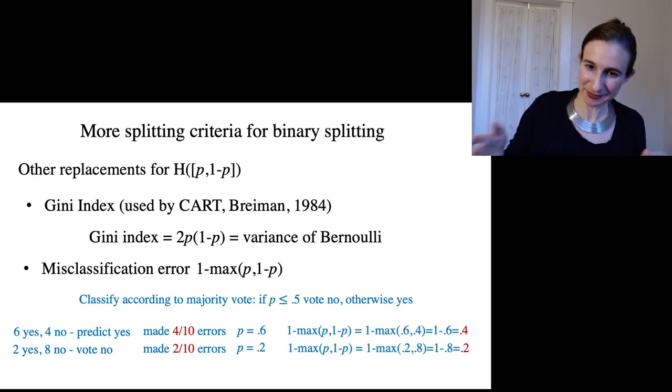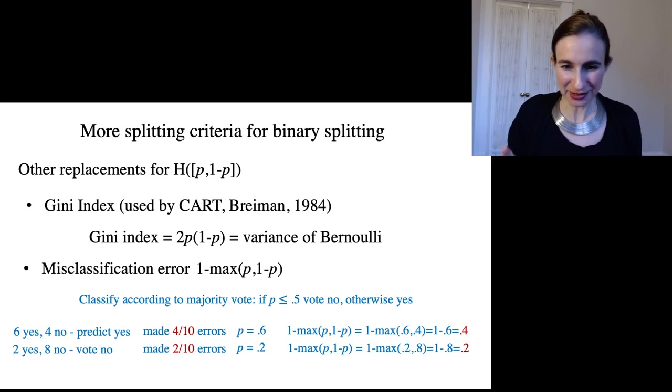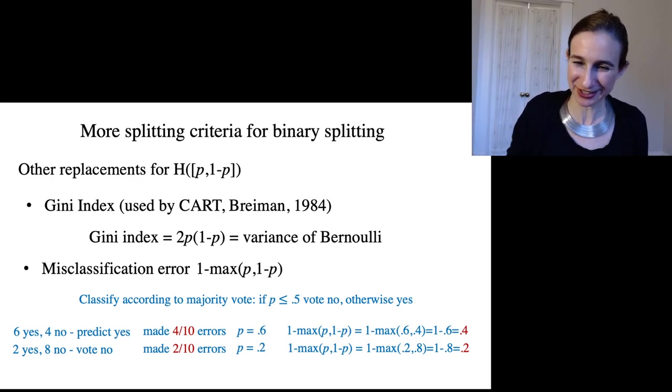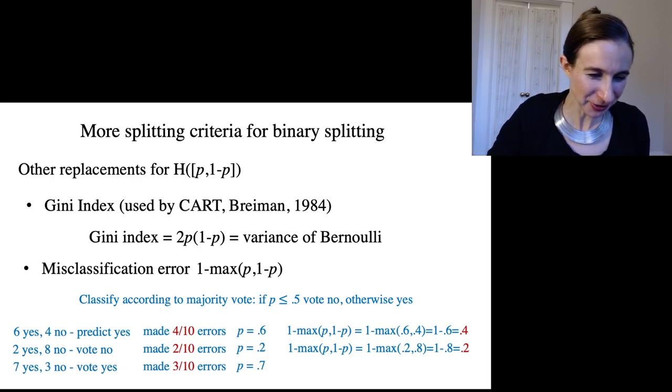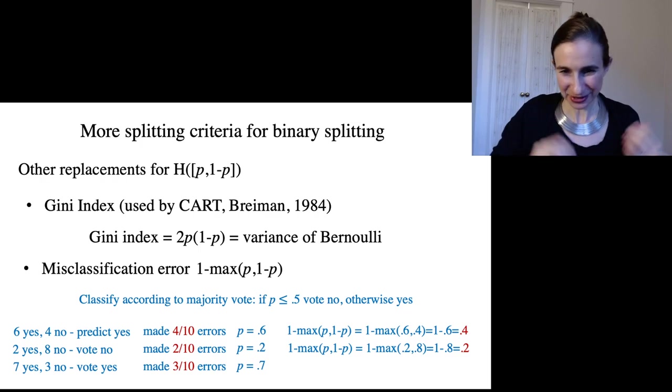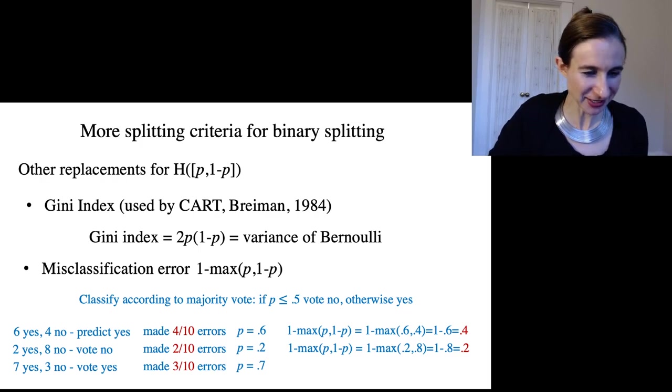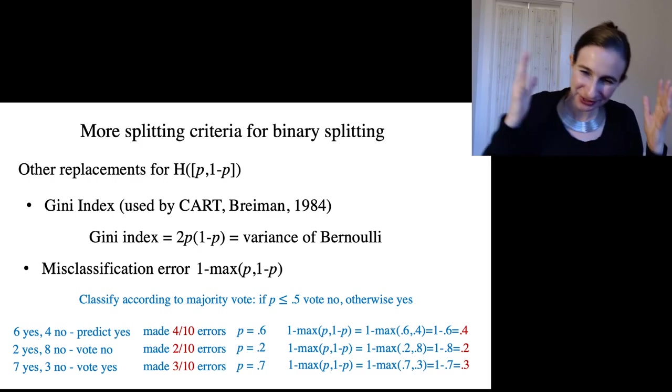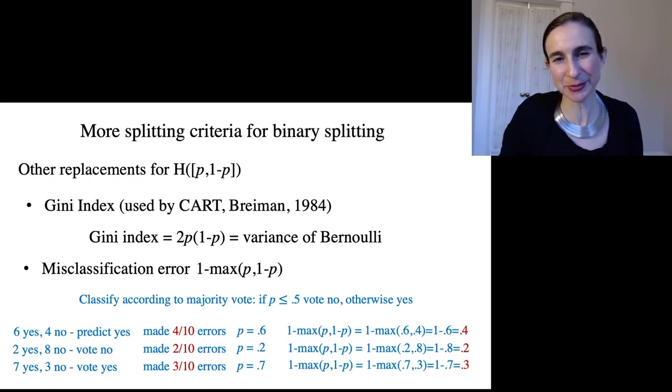And then again, when I calculate this max, inside the max there's a 0.2 and a 0.8. The larger of the two is 0.8. So the number of errors we made is 0.2. So again they agree with each other. And I put a third one there just for fun. Here we made three errors out of ten. So probability of error is 0.3. And again we get 0.3.